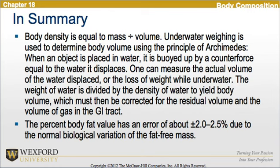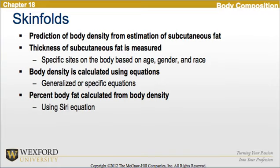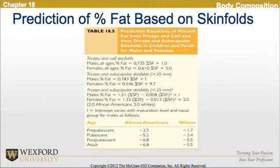Looking at skinfolds, body density is predicted from an estimation of subcutaneous fat by measuring its thickness at specific sites on the body based on age, gender, and race. Body density is calculated using generalized or population-specific equations, and body fat calculations from body density use the Siri equation. Table 18.5 shows the prediction of percent body fat based on skinfolds. Please reference your book for this table.